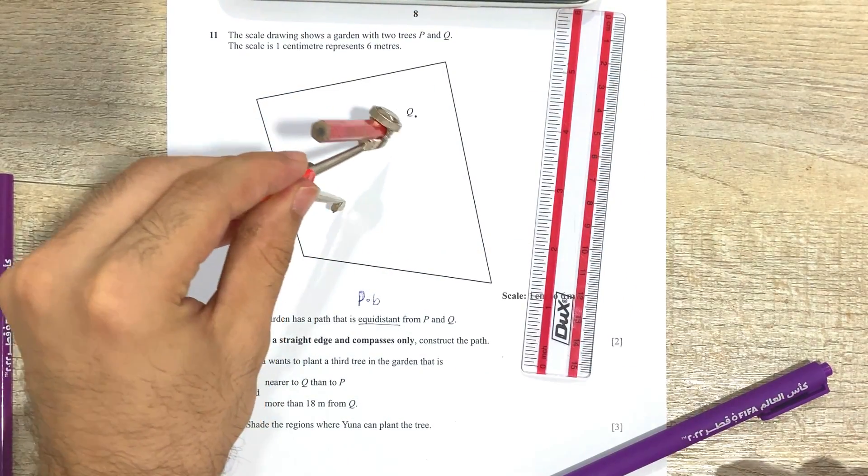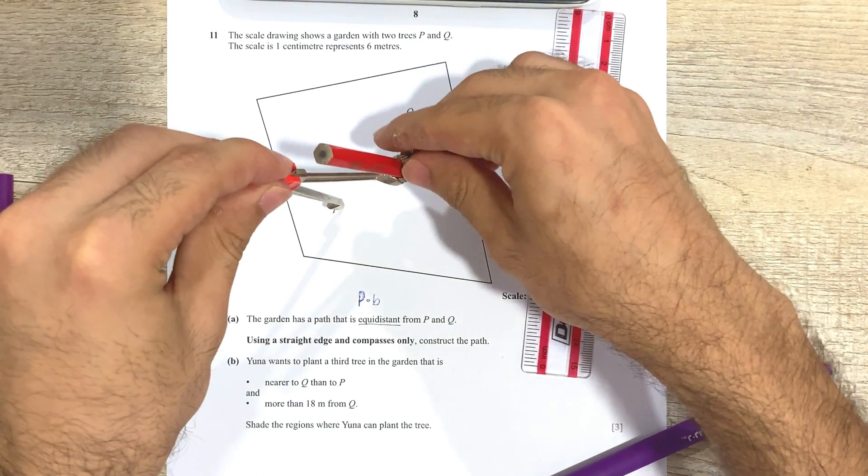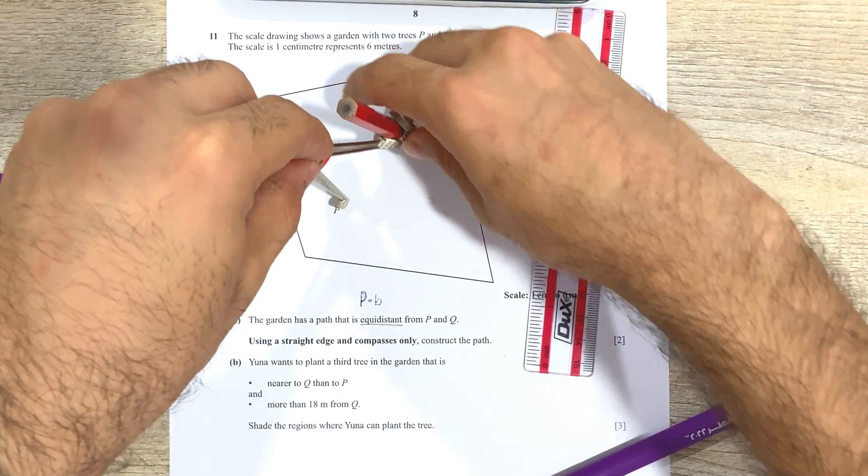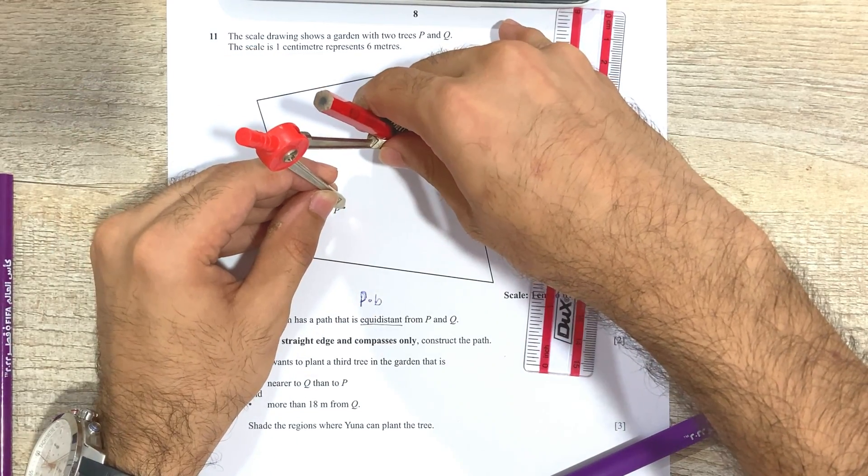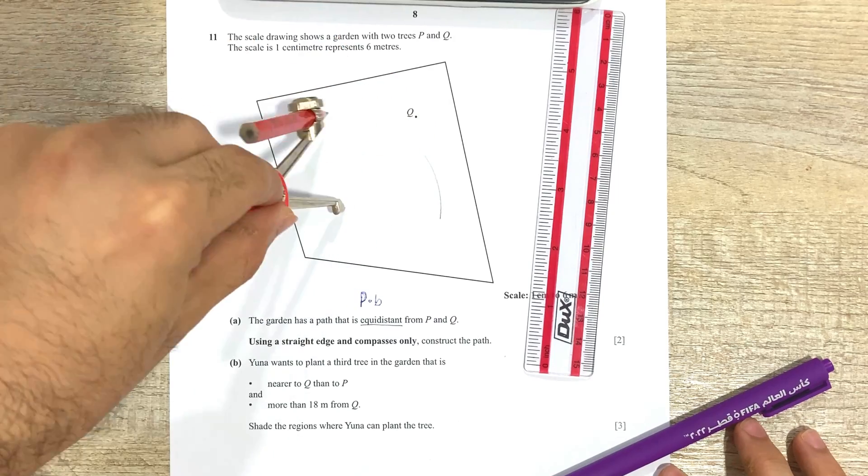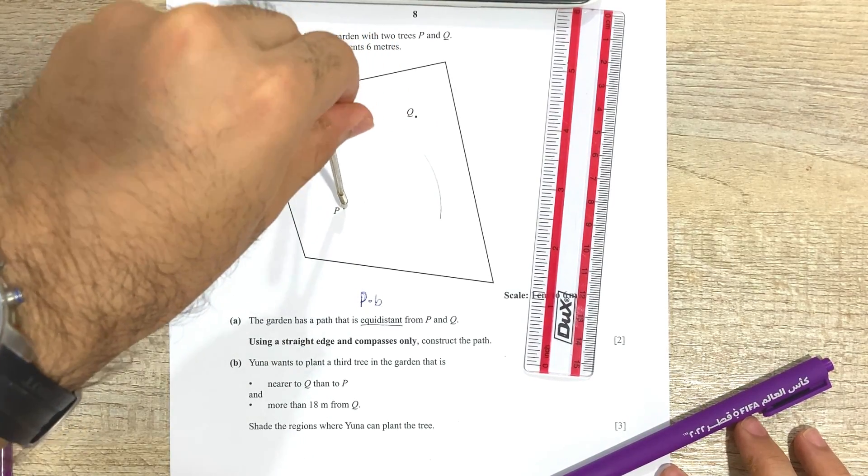For which you keep your compass at one of the two points, and you open it more than half. Okay, so you don't really have to measure and then see what is more than half, you can just do an approximate length. So this has to be more than half, so I'm making an arc over here.